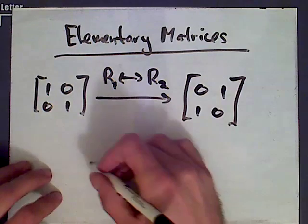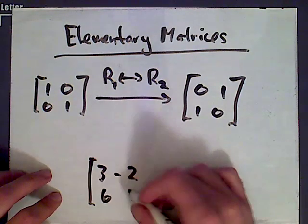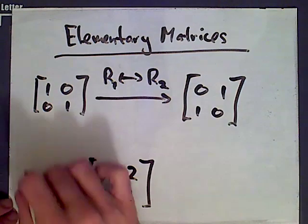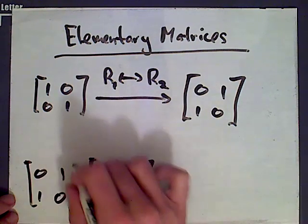And again, let's take our example matrix: 3, negative 2, 6, 1. And multiply it on the left by the elementary matrix we just obtained.